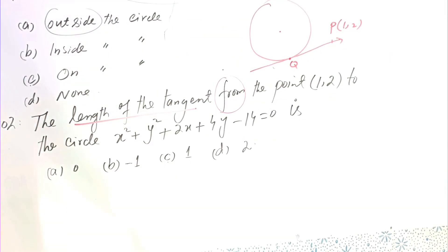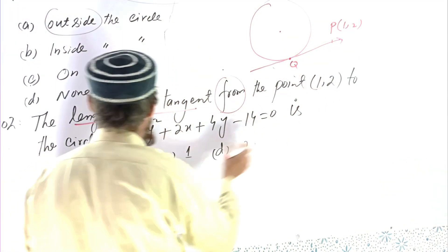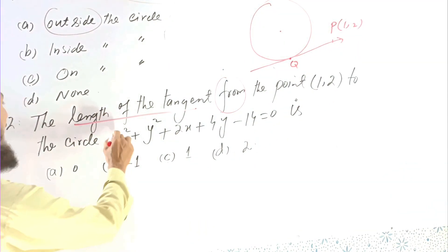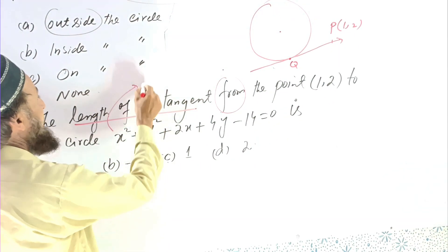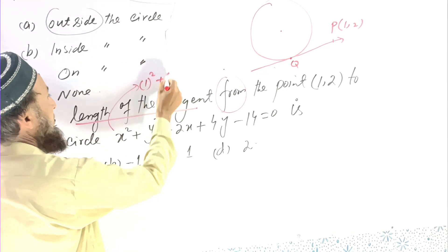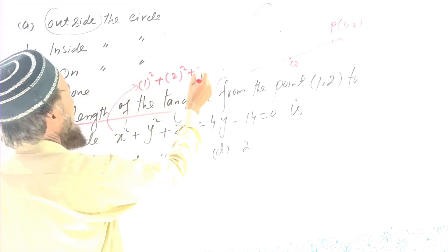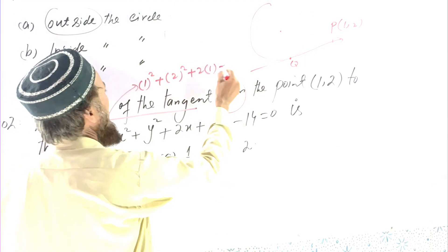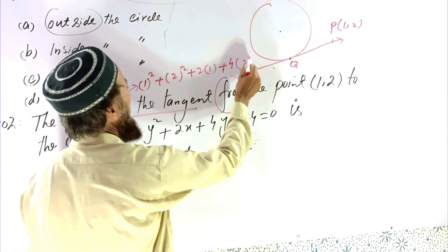What is the length of the tangent required? It means that point we directly put here and substitute. The result will be 1² + 2² + 2 × 1 + 4 × 2 - 14.